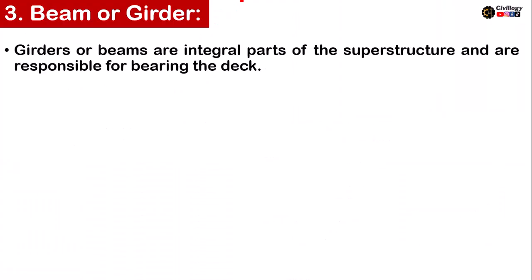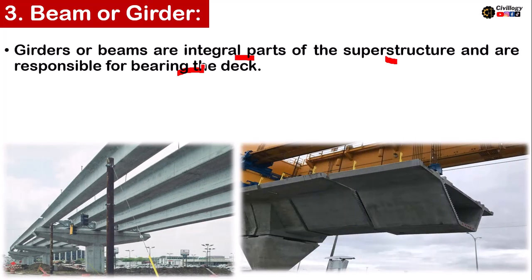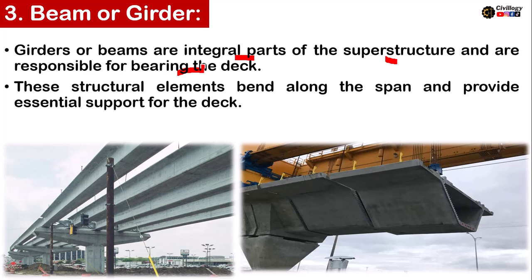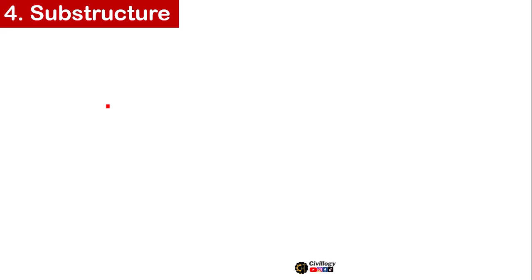Third, we have the Beam or Girder. Girders or beams are integral parts of the superstructure and are responsible for bearing the deck. The main responsibility of a beam or girder is to support the weight of the deck. These structural elements bend along the span and provide essential support for the deck.